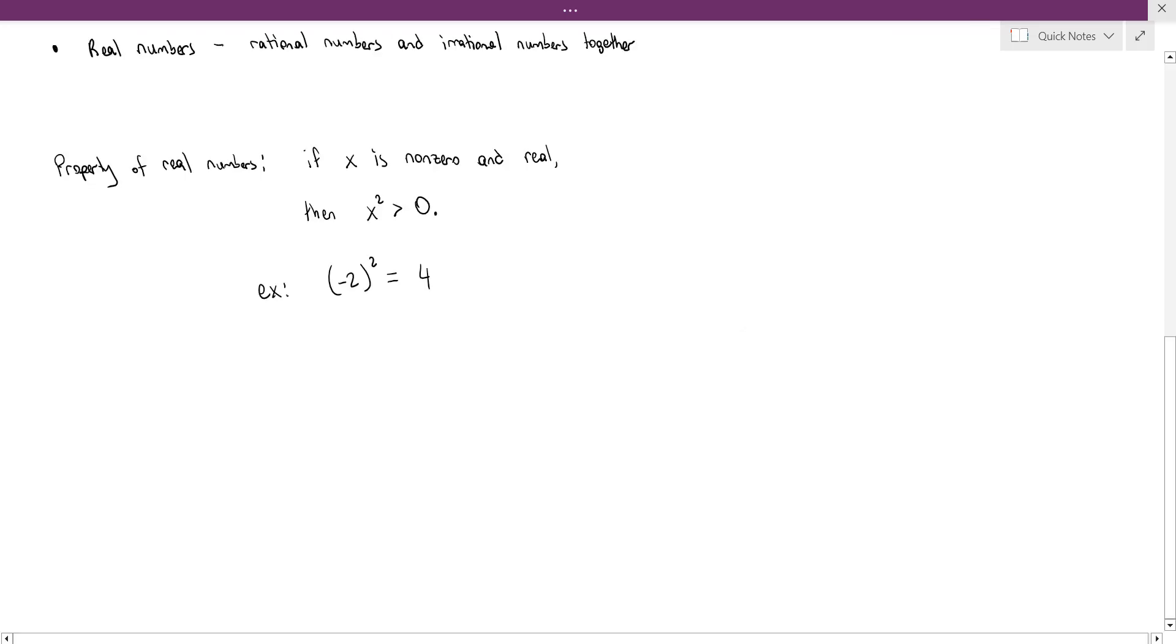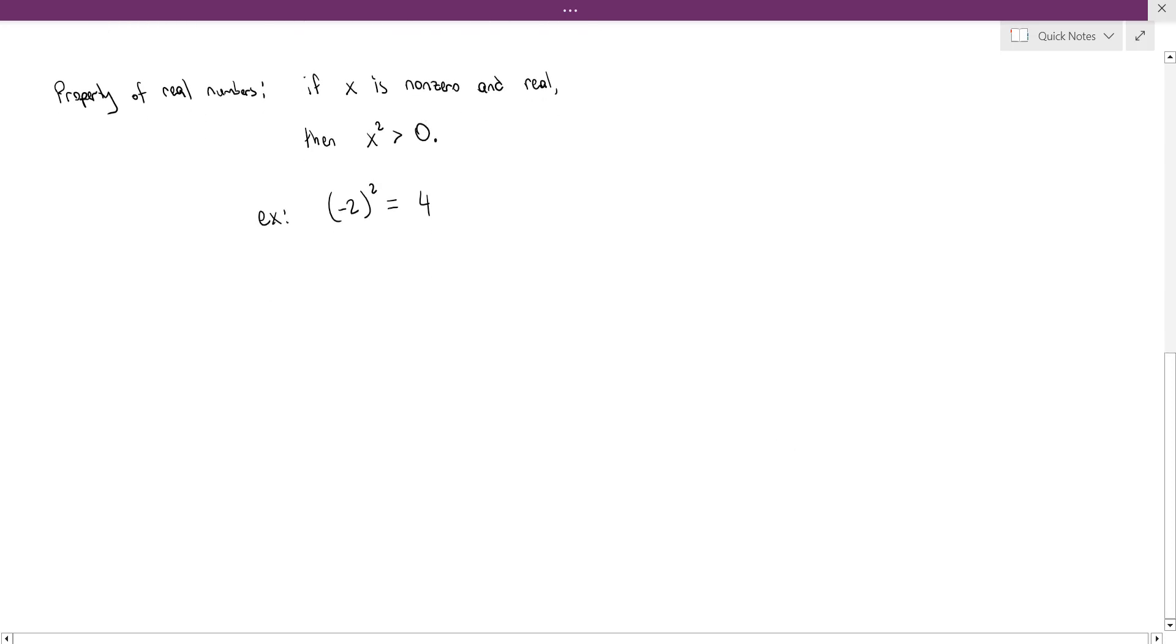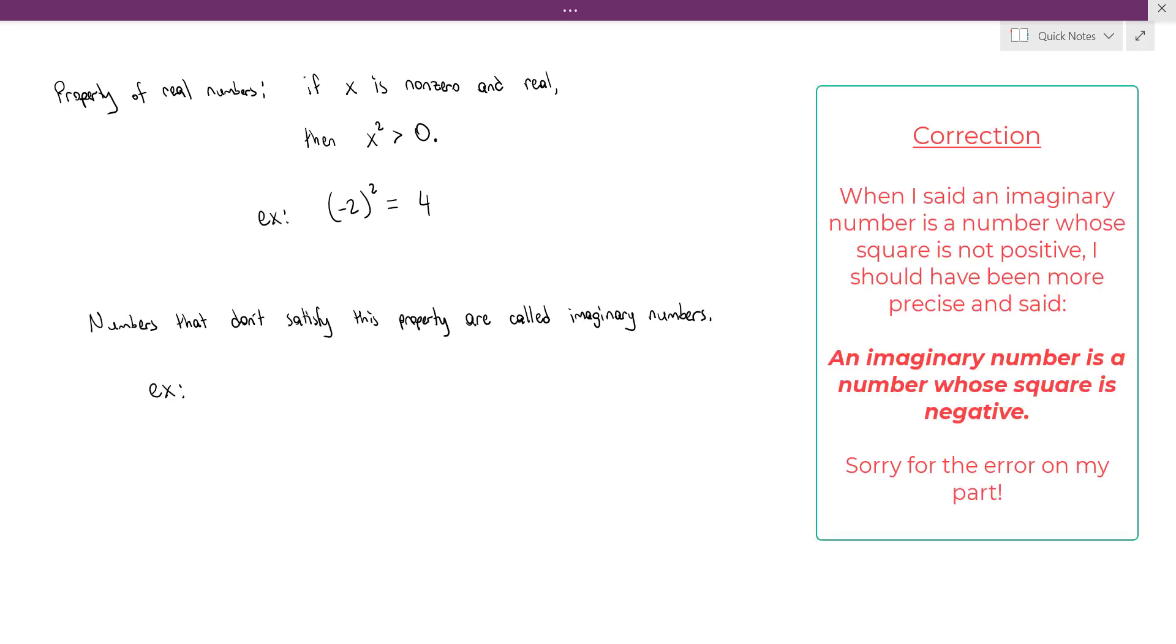So, numbers that don't satisfy this property are known as imaginary numbers. As an example, if we consider the equation x squared equals negative 1, this equation would have no real solutions. Because no real number squared could possibly give you negative 1 as a result.